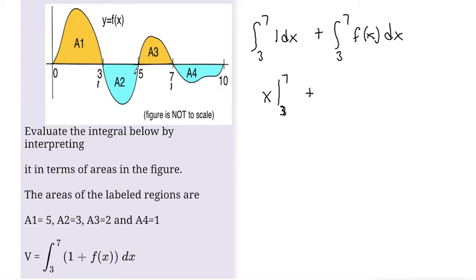Where the area under the curve, by convention we call that a negative area, and areas over the curve, or above the curve, we will take that by convention as a positive area.